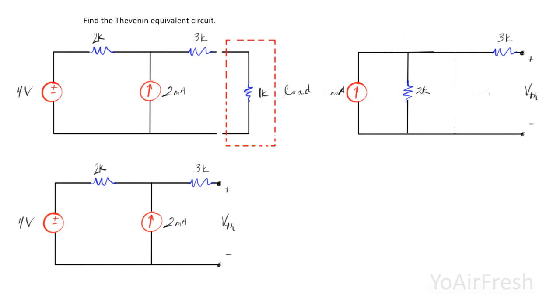So this becomes 4, but we're interested in voltage, so we're going to change this back into a voltage source now that we've combined the two current sources.